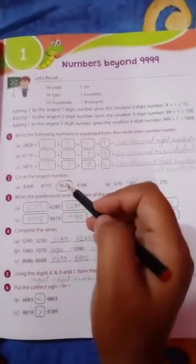Circle the largest number. Now in these digits, the largest number is the largest number. You have to circle it. Question number 3.